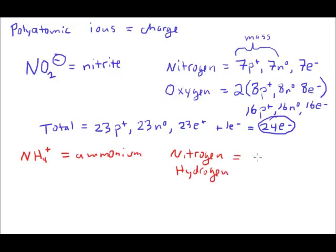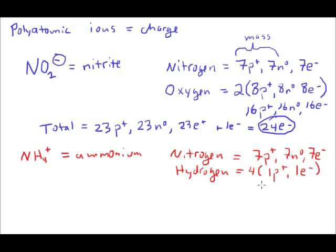Nitrogen we've already discussed has seven protons, seven neutrons, and seven electrons. Hydrogen atoms — all values multiplied by four — have one proton, zero neutrons, and one electron each. So we're going to wind up with four protons and four electrons for the hydrogen atoms in ammonium.